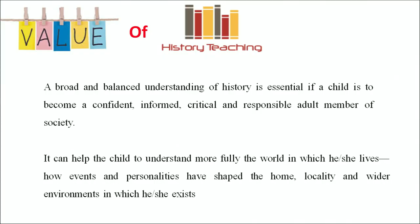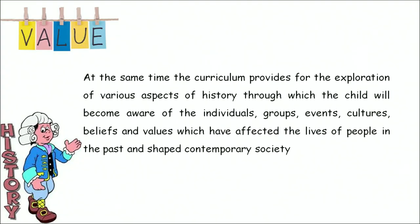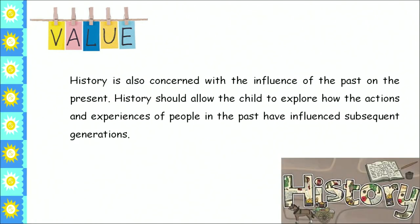A broad and balanced understanding of history is essential if a child is to become a confident, informed, critical, and responsible adult member of society. It can help the child understand more fully the world in which they live — how events and personalities have shaped their home, location, and wider environments. The curriculum provides for exploration of various aspects of history through which the child becomes aware of individuals, groups, events, cultures, beliefs, and values of the past that have shaped contemporary society. History is also concerned with the influence of the past on the present, and should allow the child to explore how the actions and experiences of people in the past have influenced subsequent generations.